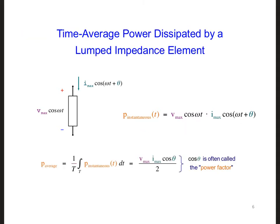Then, to obtain the time average power dissipation, we would integrate the instantaneous power over one period and divide by the length of the period.